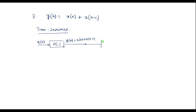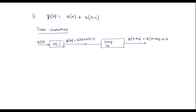Now let me apply a shift to this signal, that is a delay by n-naught units. Each n will be replaced by n minus n-naught. The output of the system will be y of n minus n-naught, equal to x of n minus n-naught plus x of n minus n-naught minus 1. I will call this equation 1. This is the shift in the output signal.